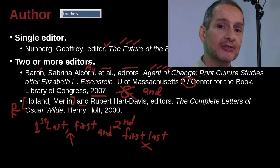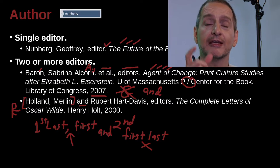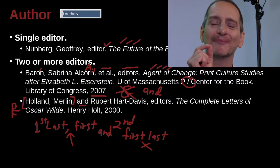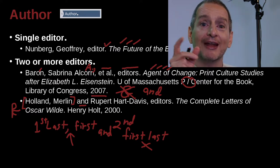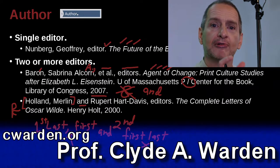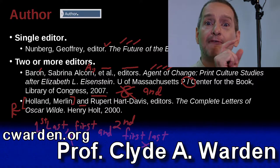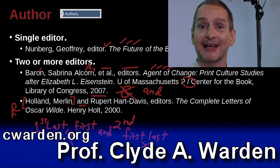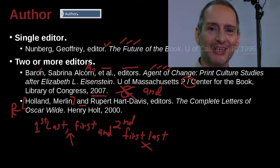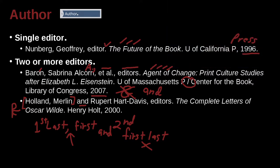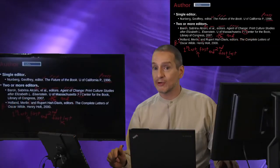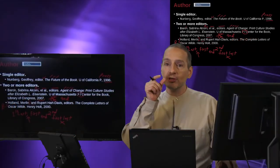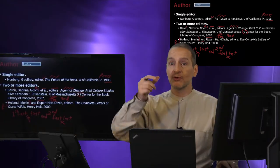What about three authors? Three authors are easy. The first author comes first, then you say et al. That first author is last name first, first name last. So MLA looks like it has some inconsistency, but it's pretty easy once you get the idea. It's only the first author whose name we reverse.